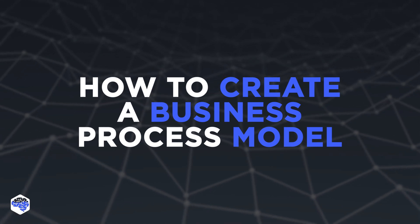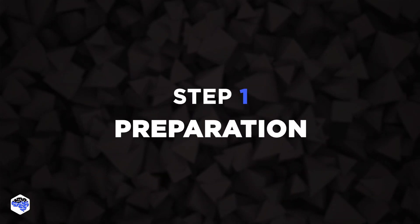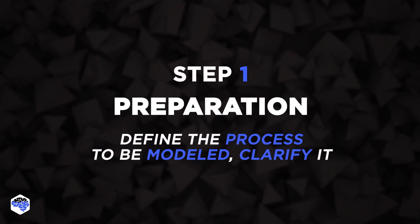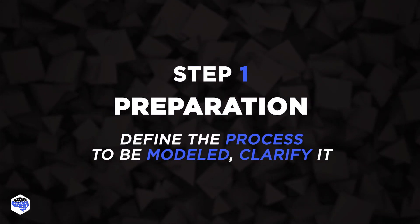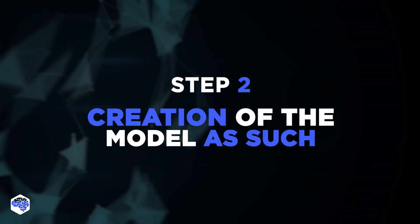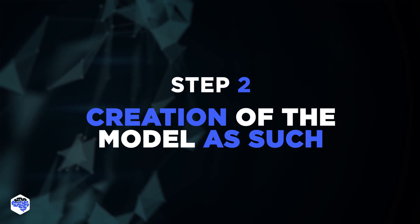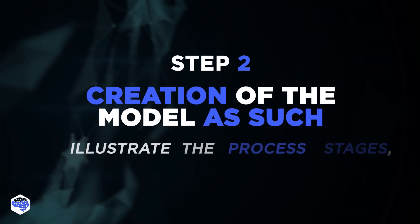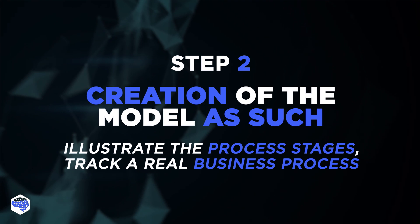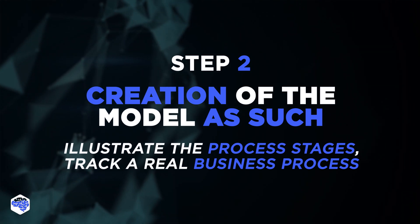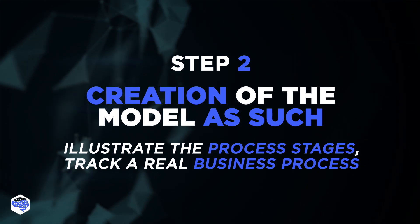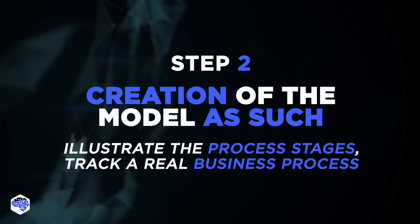How do you create a business process model? There are three steps. Step 1: Preparation — define the process to be modeled in your business operation, and clarify who or what is doing each stage. Step 2: Creation of the model — begin by including the start point to illustrate the process. After determining each subsequent stage involving solutions in between, arrange those in order. Track a real business process and collate it into your model.